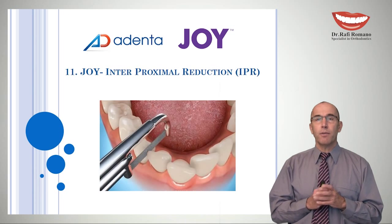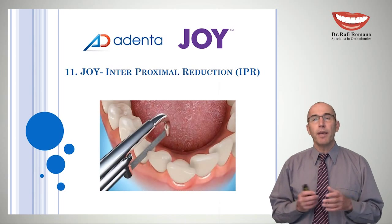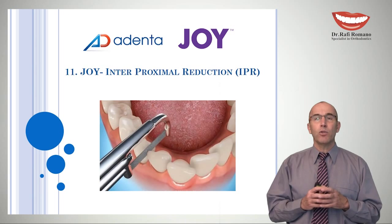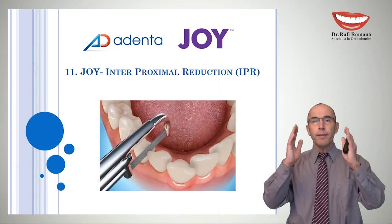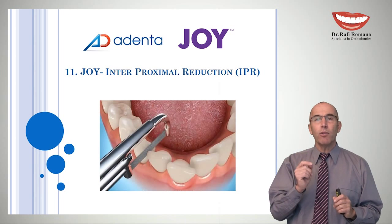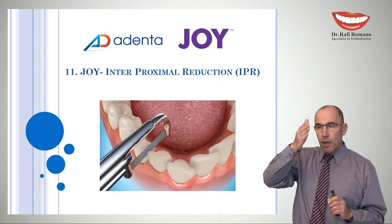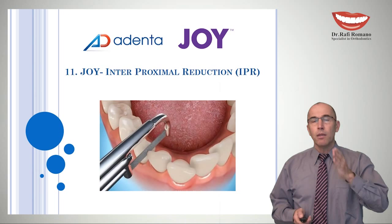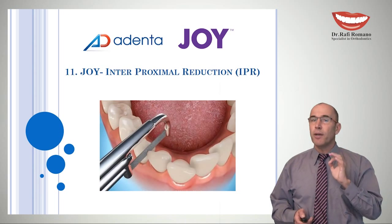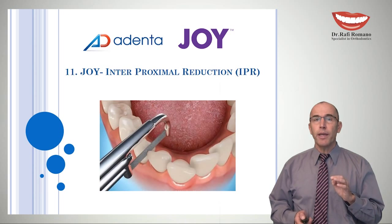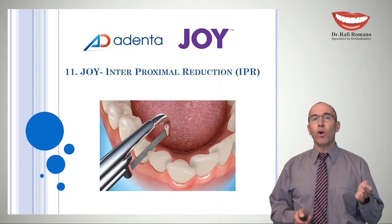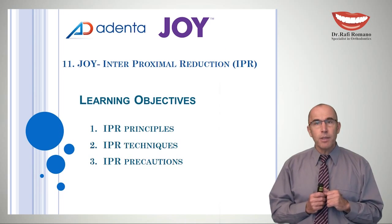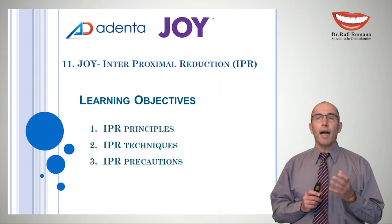Interproximal reduction has a few names like IPR, stripping, and tooth reduction. All of these describe a procedure where we take a very minimal amount of tooth structure at the contact point between the teeth — we peel some enamel in a very calculated way in order to gain space and avoid extractions. We will overview the IPR principles, techniques, and precautions.